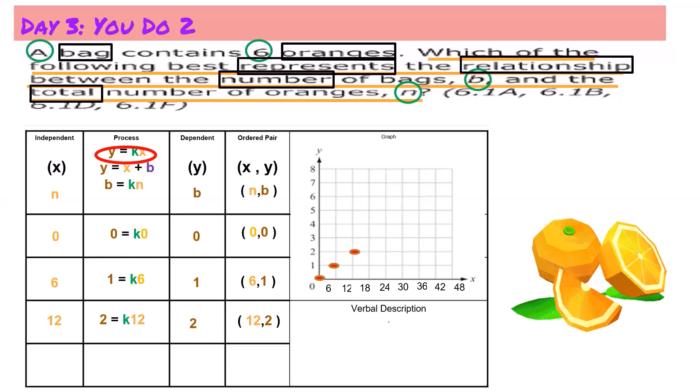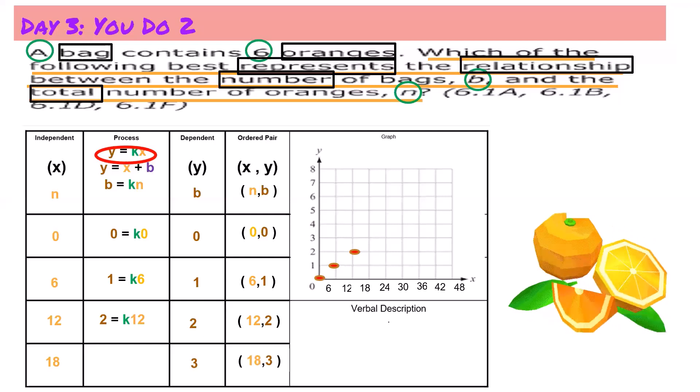And when I write it as an equation, it would be two equals k times 12. Next, if I had 18 oranges I would need three bags. My ordered pair would be 18 and 3, and on my graph this means I would go over 18 places and up 3. My equation would be 3 equals k times 18.